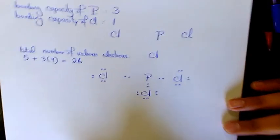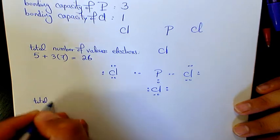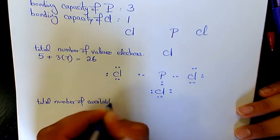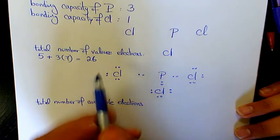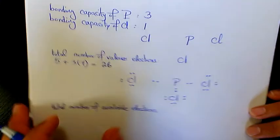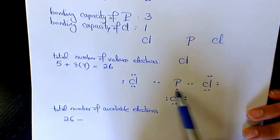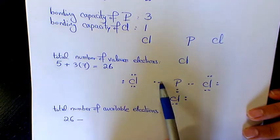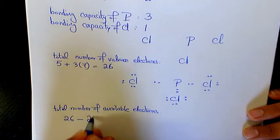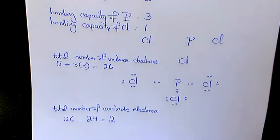Now we need to find out how many available electrons we still have. The total number of available electrons equals the total we started with — twenty-six — minus whatever we've used so far. Counting: we've placed twelve pairs, which is twenty-four electrons. So we still have two more electrons remaining.